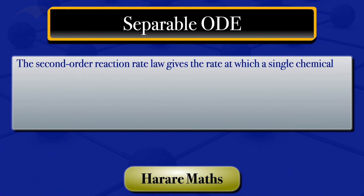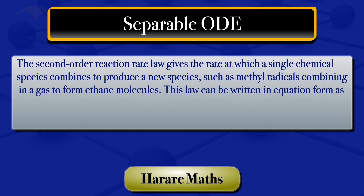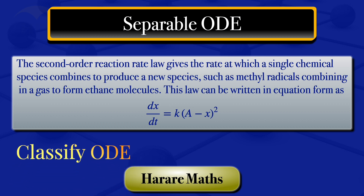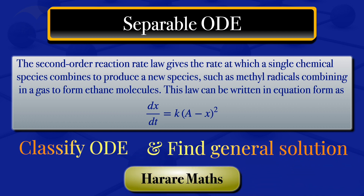The second-order reaction rate law gives the rate at which a single chemical species combines to produce a new species, such as methyl radicals combining in gaseous form to form ethane molecules. This law can be written in differential form as: the derivative of x with respect to t equals k multiplied by (a minus x) squared. In this tutorial, I'm going to classify this ODE and then find its general solution.